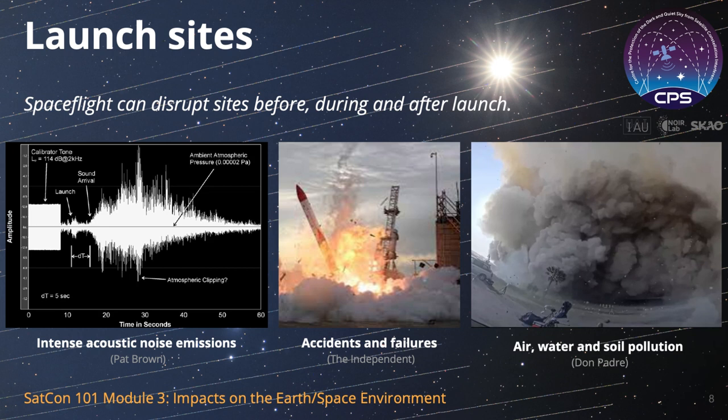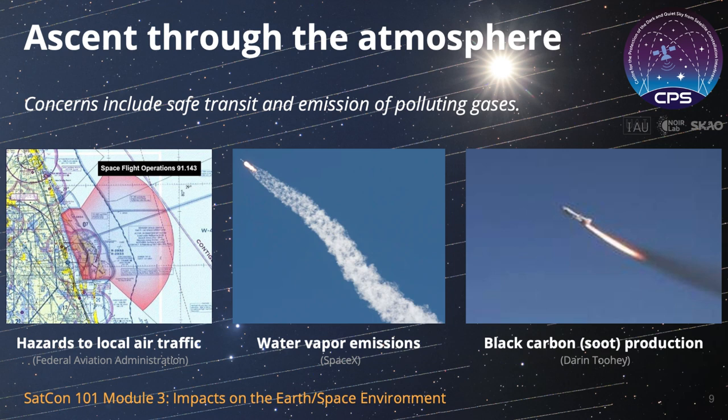Engineering innovation may help minimize some of these effects. For instance, the controlled return of reusable rockets to the ground or to sea-based platforms helps reduce the influence of hardware that is destroyed during re-entry or disposed of permanently in the ocean. As a rocket moves away from the launch site and transits through the atmosphere, it continues to impact the environment. Air traffic must remain clear around the site to ensure the safety of aviation. And the exhaust from rockets puts materials into the air that have effects on atmospheric chemistry and the climate.